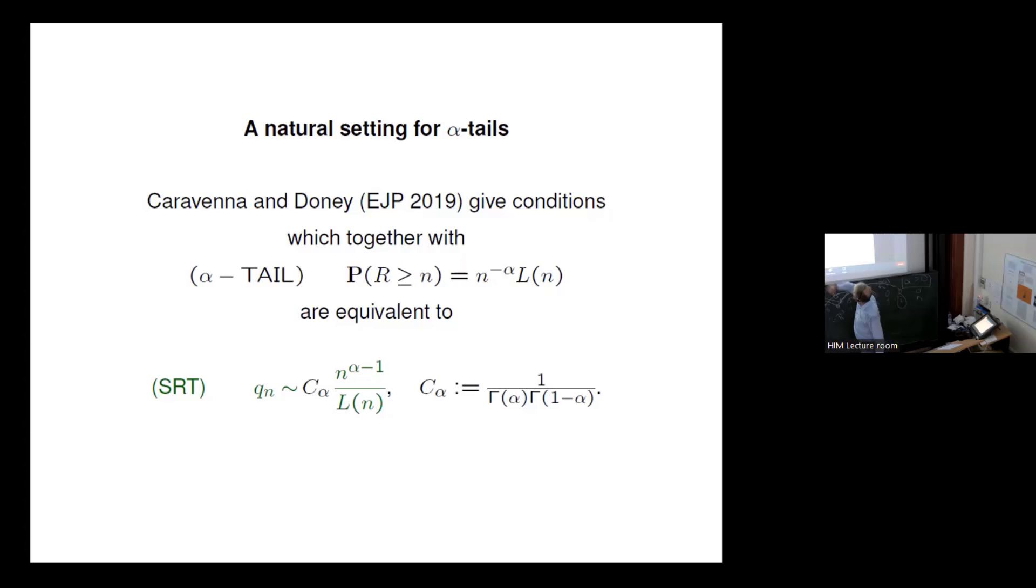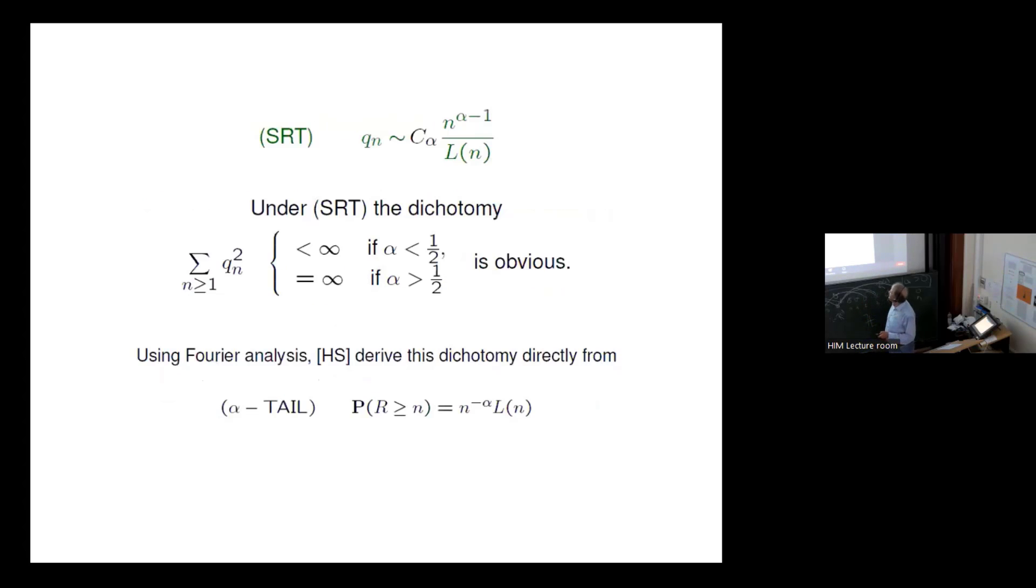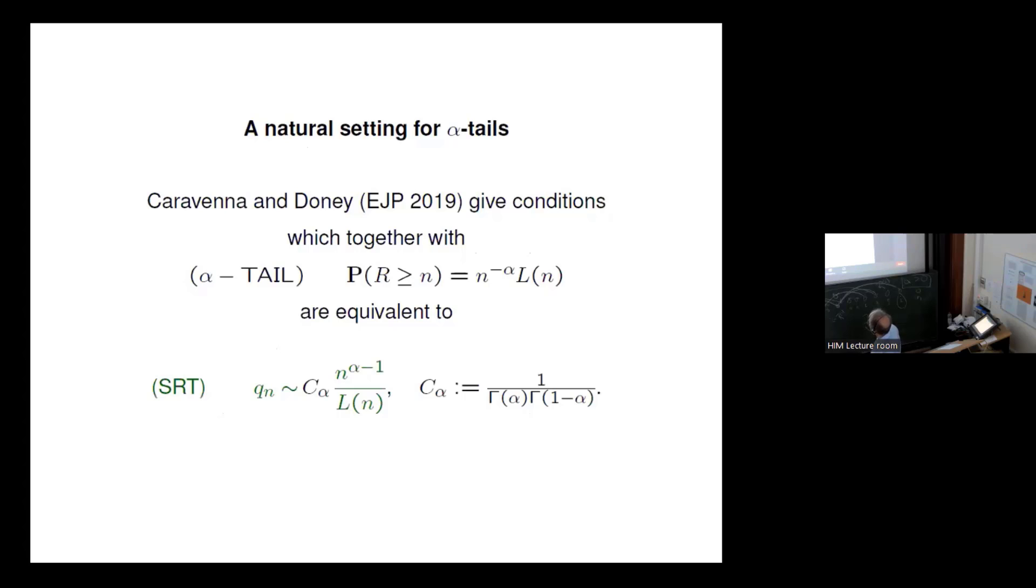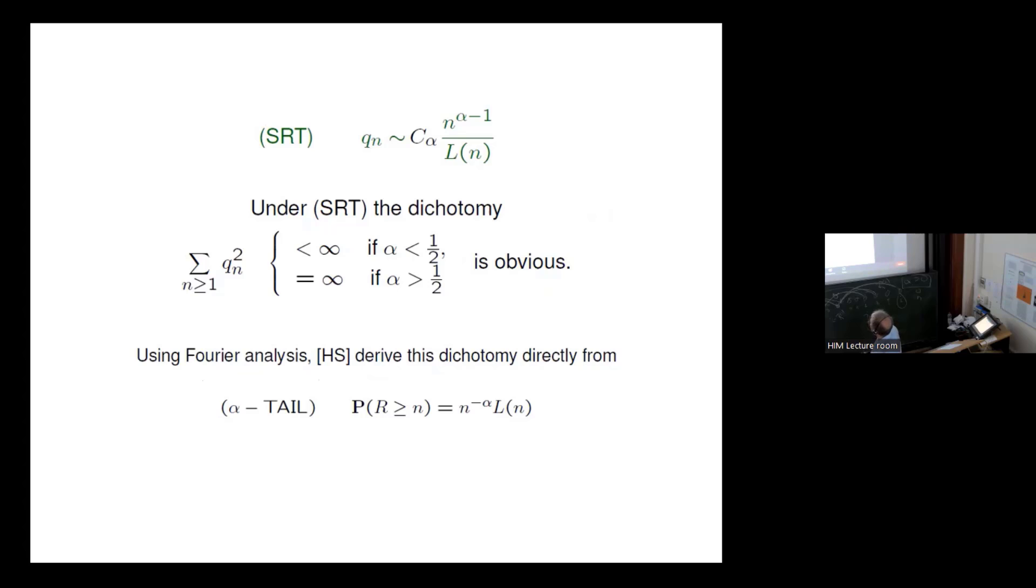Okay, and we will always now assume this SRT. That also the renewal function has these nice tails. And this works for alpha into one, or for any alpha? For any alpha, I think, yes, yes, yes. And under SRT, this dichotomy is of course now trivial. Because when we have SRT, then we have this, and then it just depends on the square is then n to the 2 alpha minus 2. And then it's the usual thing that the summability is then at alpha equals one half.